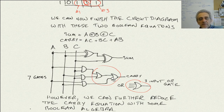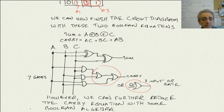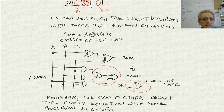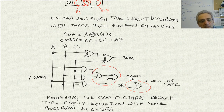The outputs are all ANDed and then ORed. The OR gate can actually take three inputs, so we could replace the two OR gates with just one OR gate with three inputs from the three AND gates. That is sufficient, but there is a way to simplify it a little bit more.